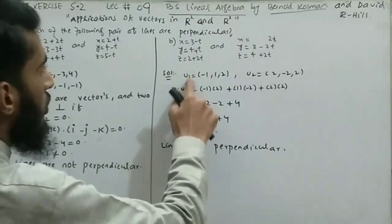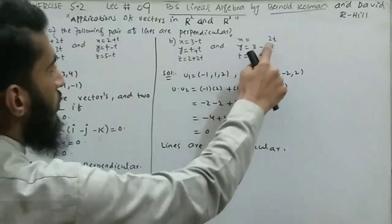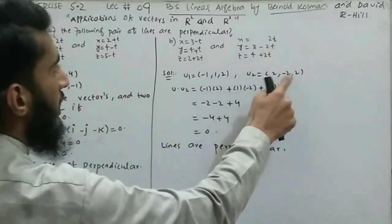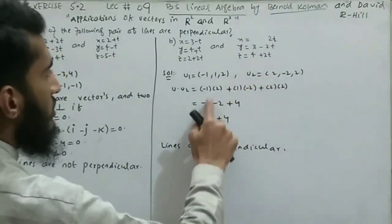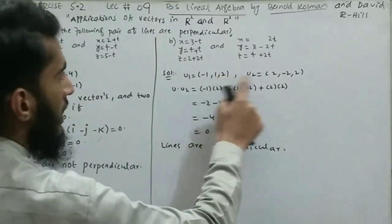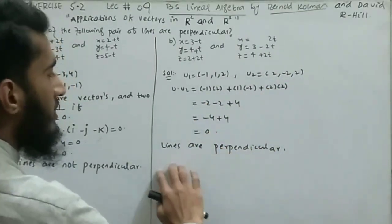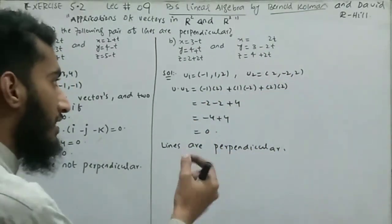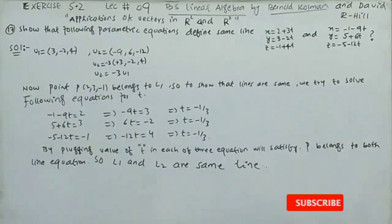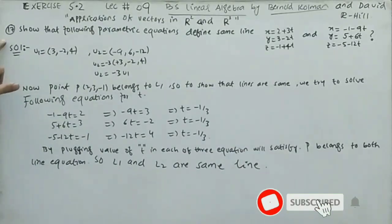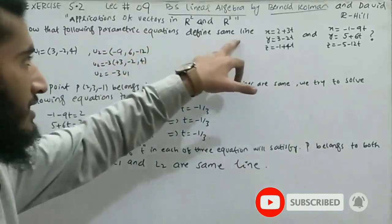For Part (b), the direction vectors are u₁ = (-1, 1, 2) and u₂ = (2, -2, 2). The dot product is (-1)(2) + (1)(-2) + (2)(2) = -2 - 2 + 4 = 0. Since the dot product equals zero, these lines are perpendicular.